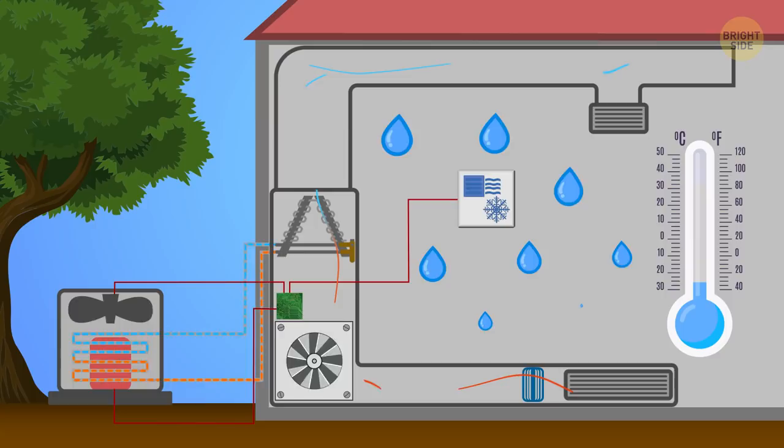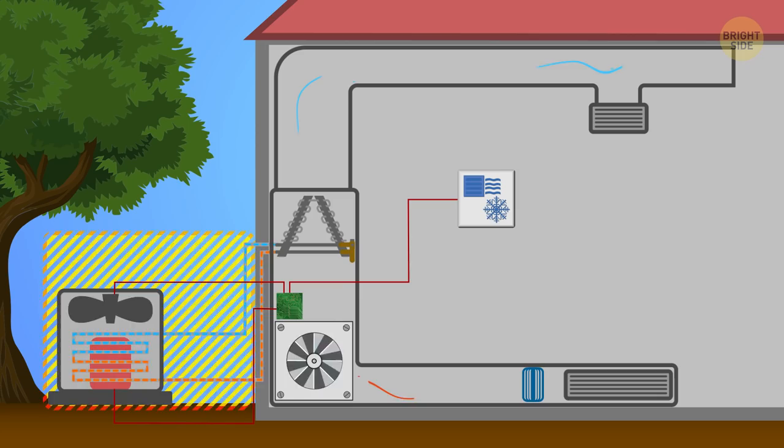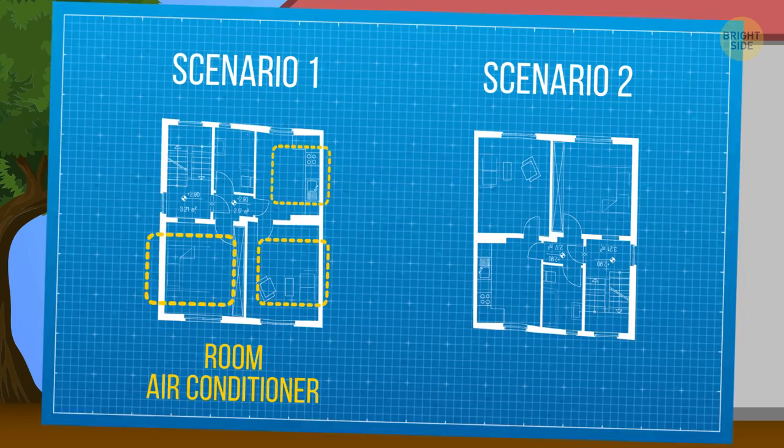It has two basic parts units, the outdoor unit and indoor unit. There are two possible scenarios. You can have either a room air conditioner or a central air conditioner.